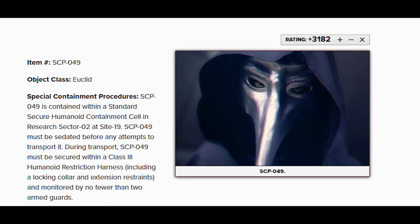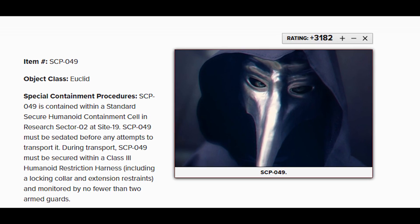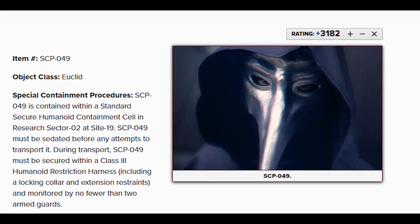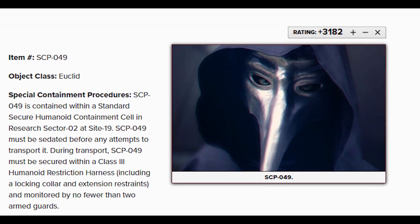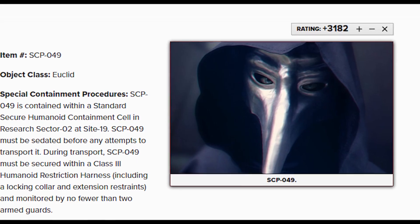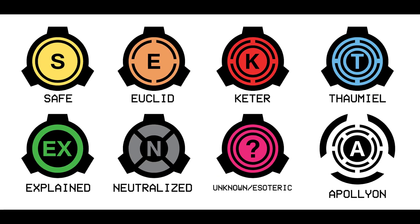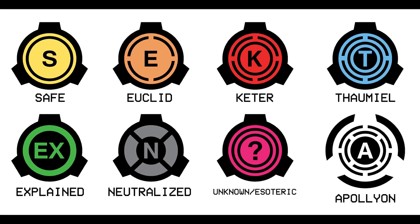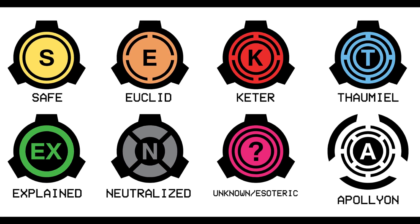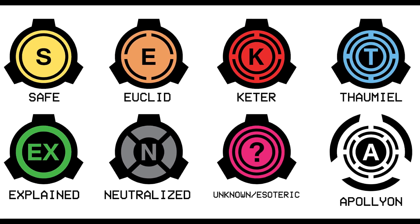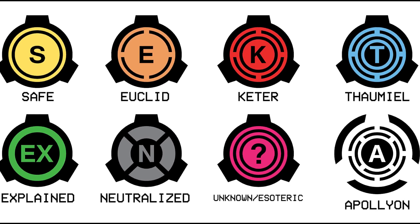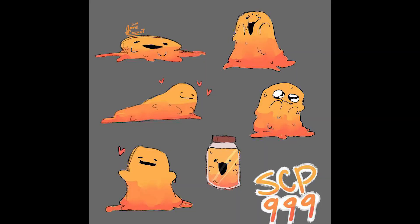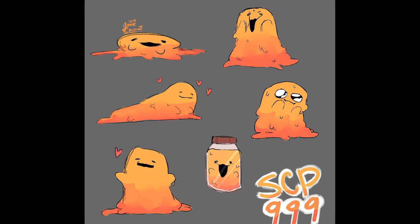In the wiki you will find that all SCPs are assigned an object class, which indicates how easily an SCP can be contained. There are 5 primary classes used in the Foundation: Safe, Euclid, Keter, Thaumiel, and Neutralized.